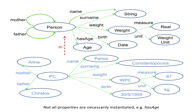On the left we have two other properties, mother and father. Because the mother of a person is a person too, and the father of a person is also a person, the domain and range of the mother and father properties are both the same class person. This is represented by an arrow emanating from and returning to the same entity, which is sometimes called a self-association.